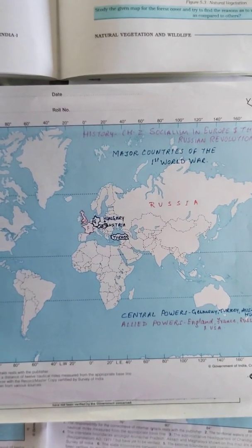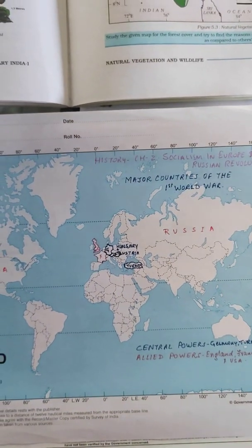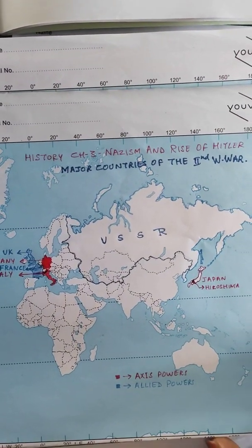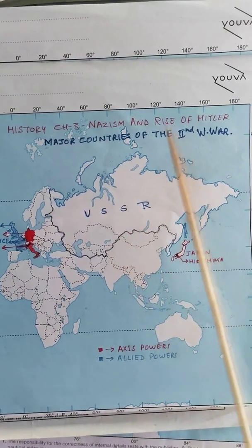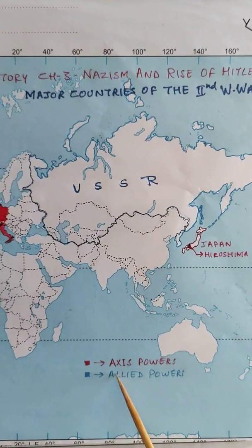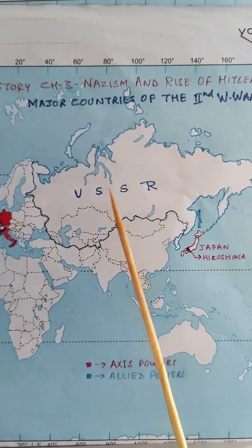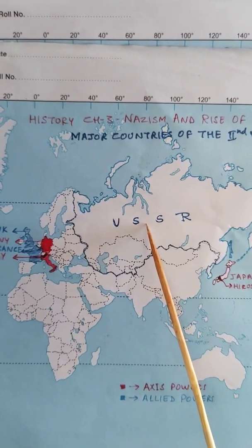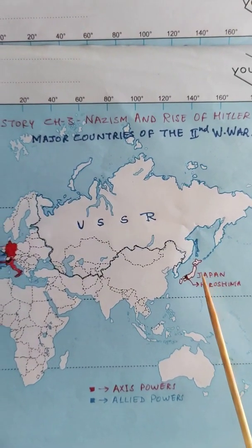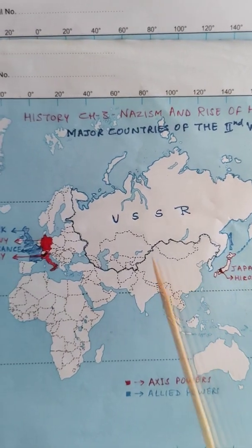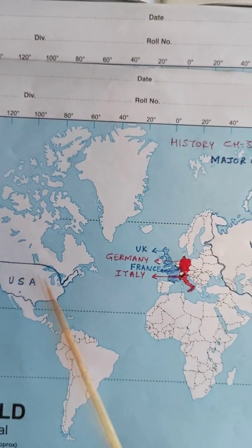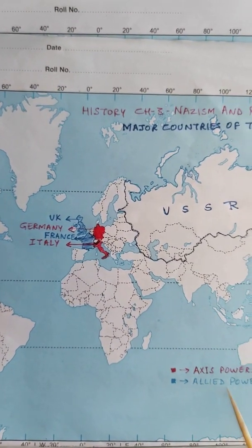Now the second history map is showing the major countries of the Second World War, from chapter Nazism and Rise of Hitler. Axis powers are marked with red and Allied powers with blue. The Allied powers are USSR, UK, France, and USA. The Axis powers are Japan, Germany, and Italy.